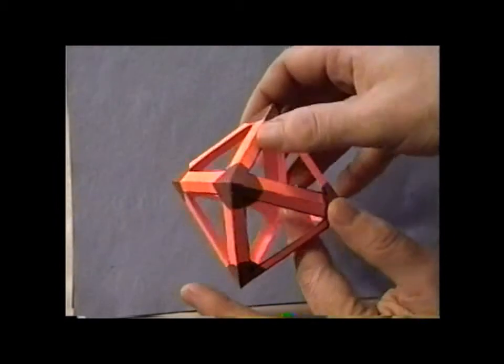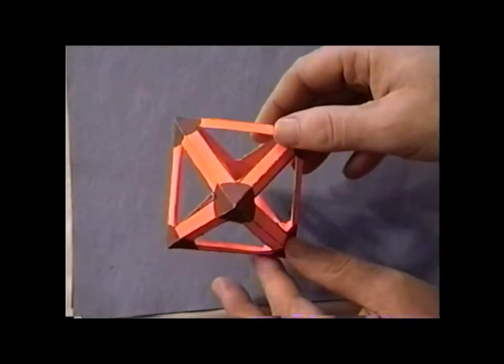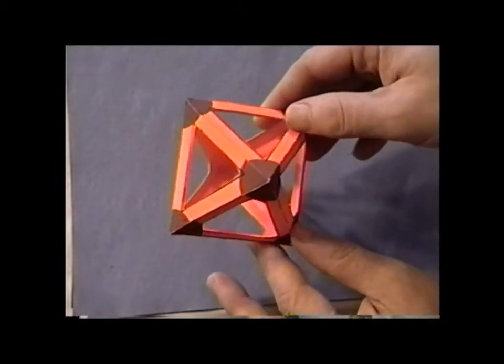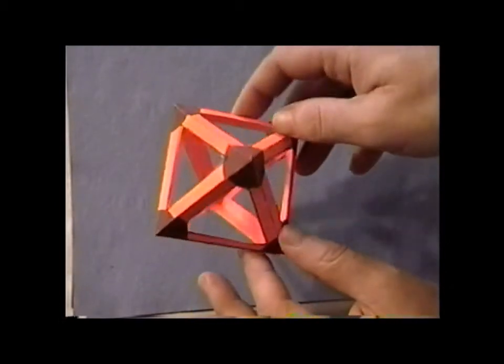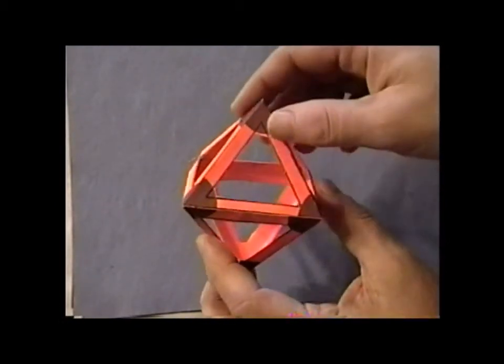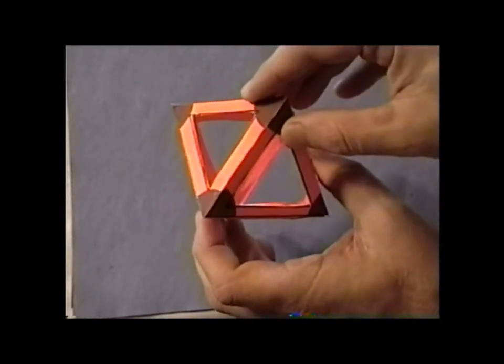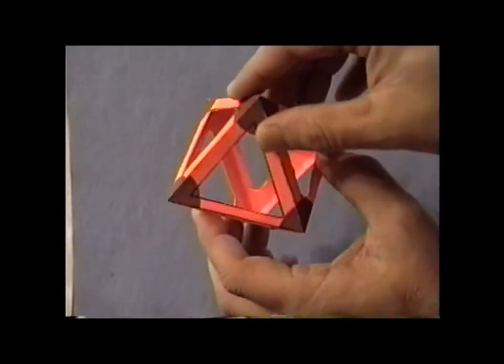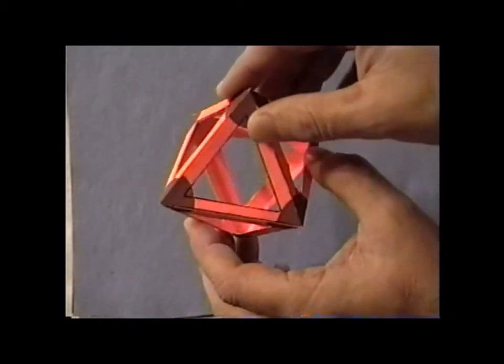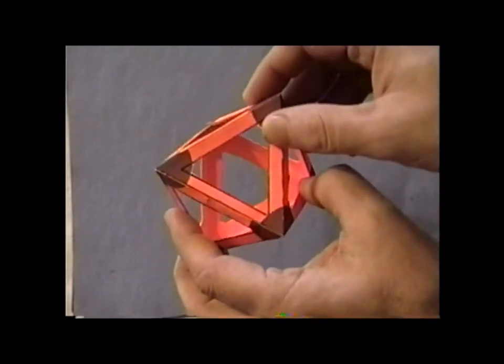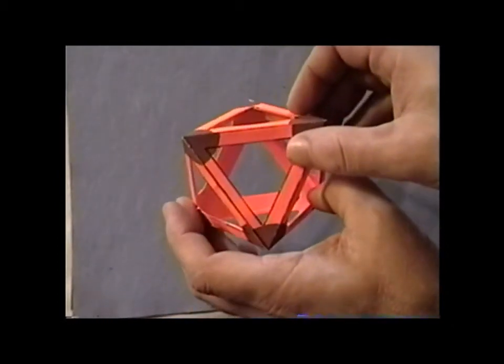Turn it around. Looking from the top, we can kind of see the four-fold symmetry. And then looking down this way, you can see the three-fold symmetry. So that is the octahedron.